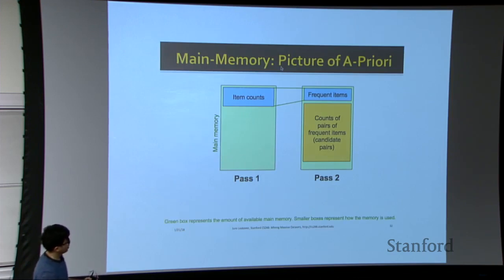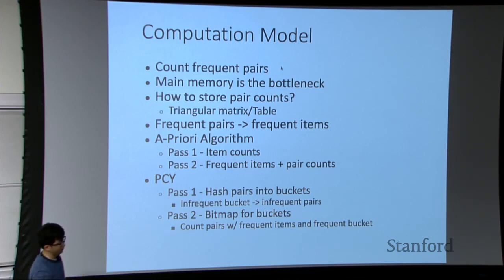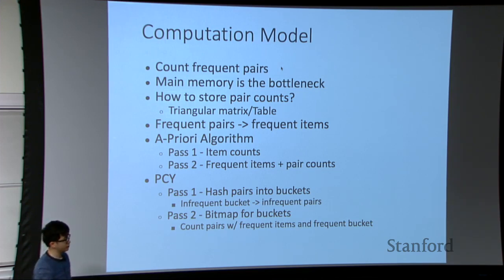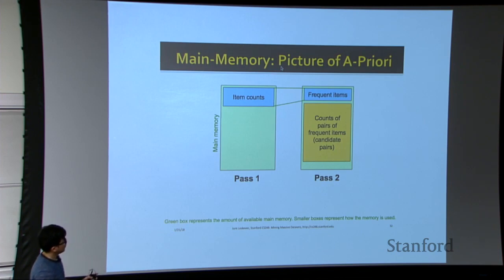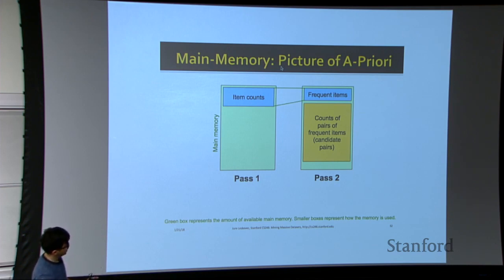For A-Priori, it has two passes. In the first pass, we keep a count of items only, because the bottleneck for frequent item counting is mostly the frequent pairs — you need to combine any two items to see whether they are frequent. A-Priori first counts items, and in the second pass, it shrinks the item counts to only the frequent items. By monotonicity, we only need to count candidate pairs where both items are frequent, which saves memory.